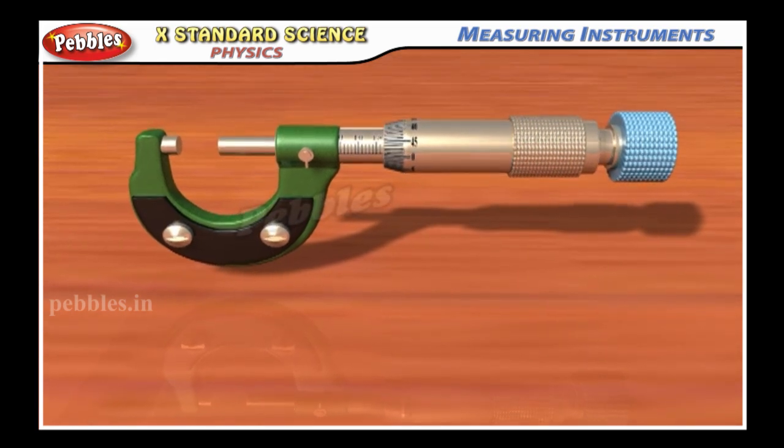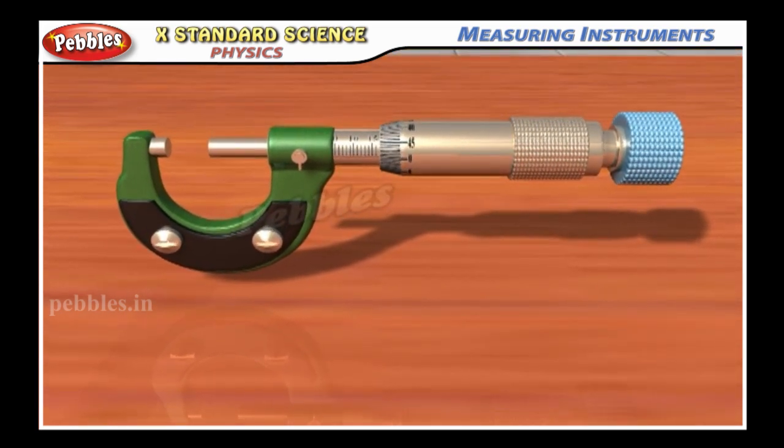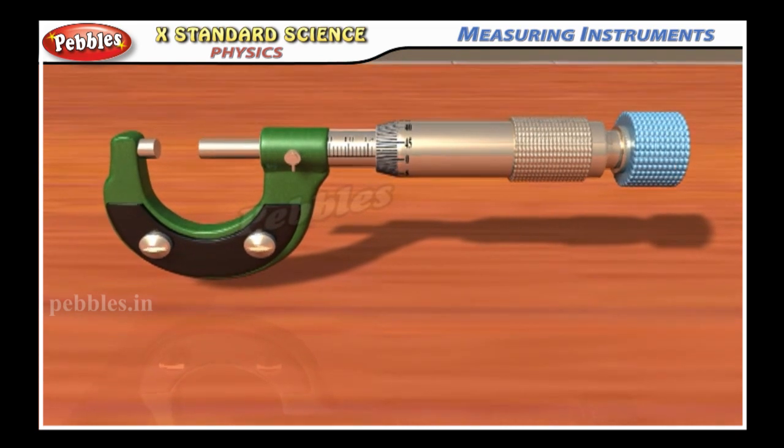The screw gauge is an instrument to measure the dimensions of very small objects up to 0.001 cm.